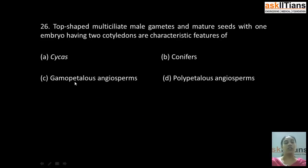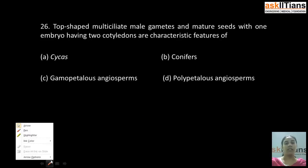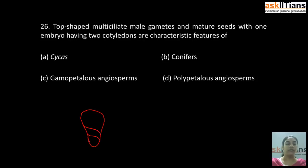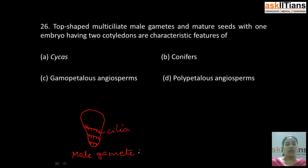Moving on to our next question: top-shaped, multiciliate male gametes and mature seeds with one embryo having two cotyledons are characteristic features of — A) Cycas, B) conifers, C) gamopetalous angiosperms, D) polypetalous angiosperms. The correct answer is A: Cycas. Cycas has top-shaped multiciliate male gametes and mature seeds with one embryo having two cotyledons. The top-shaped male gametes of Cycas have cilia present on the surface.